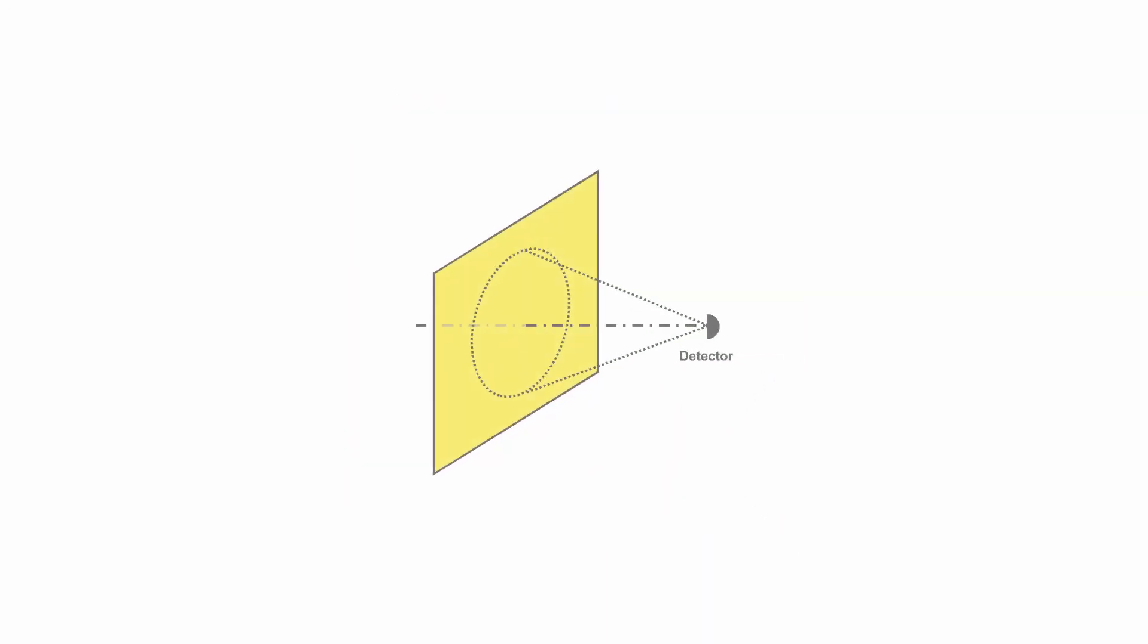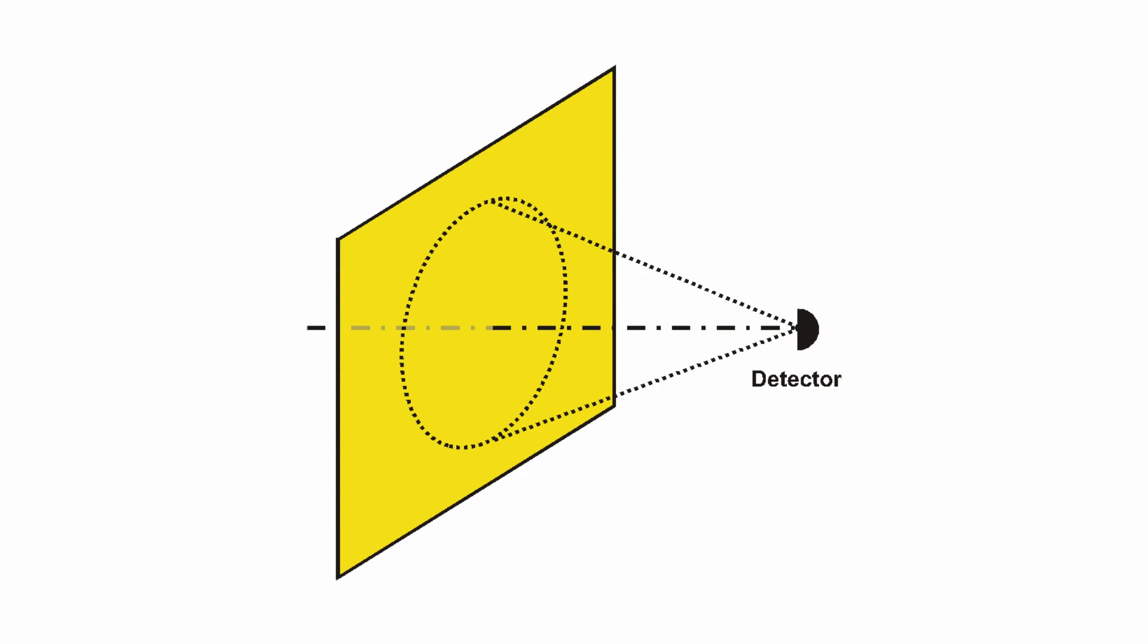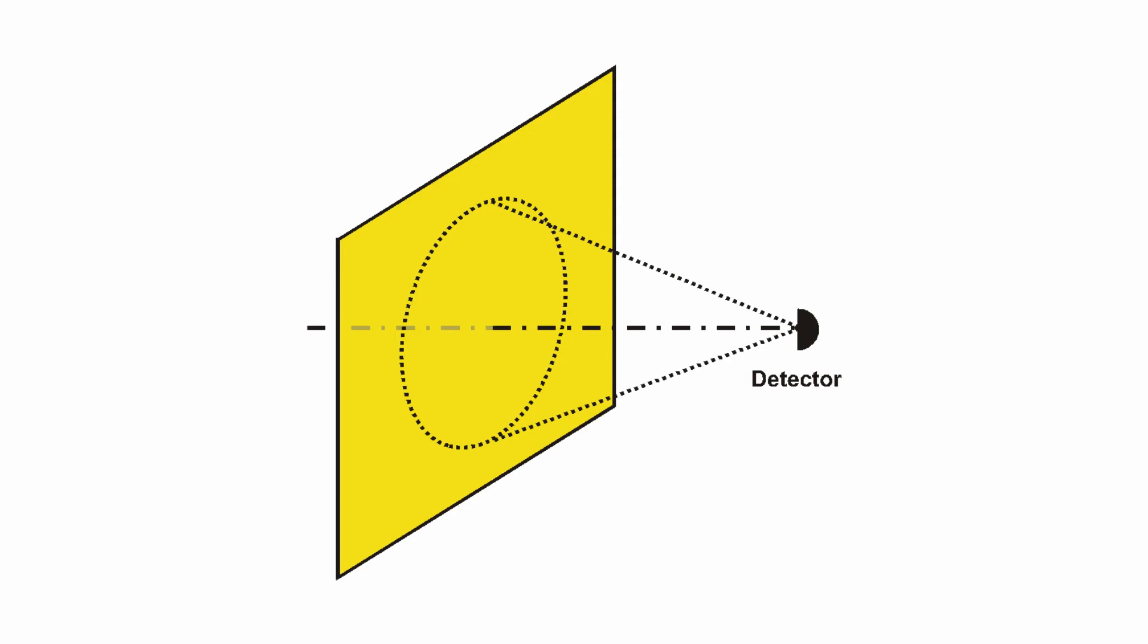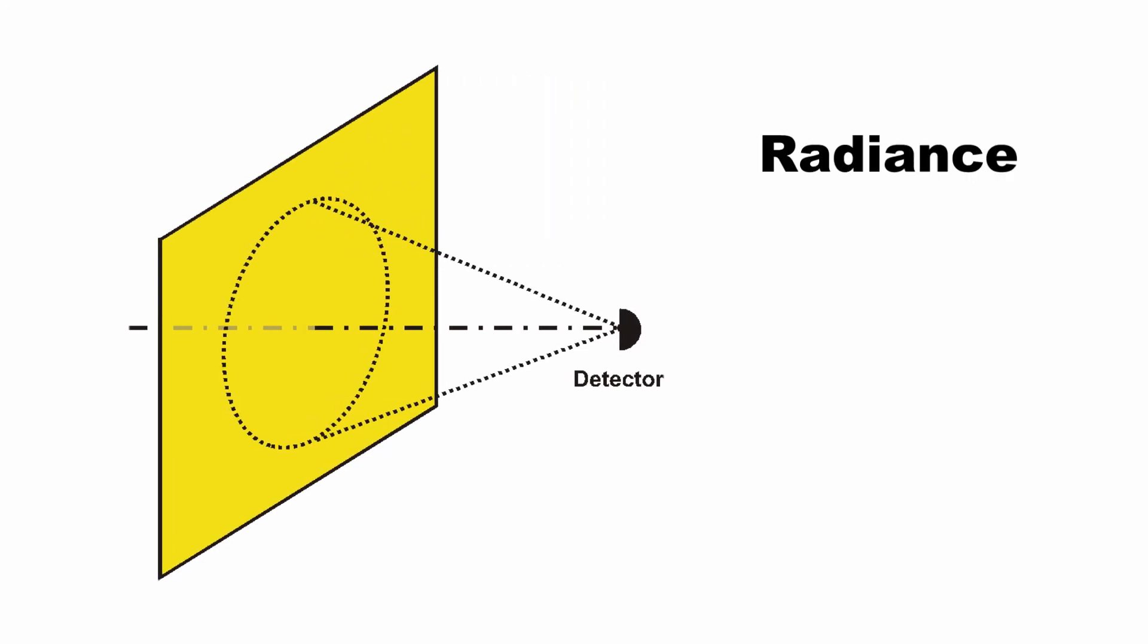The next measurement is light energy emitted by a surface. This measurement is defined as the light emitted by a surface into a solid angle terminating at a detector. For radiometric measurements, the measurement is called radiance. For photometric measurements, the measurement is called either luminance or brightness.